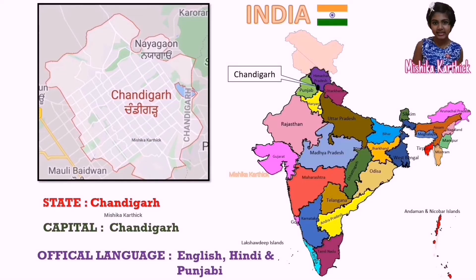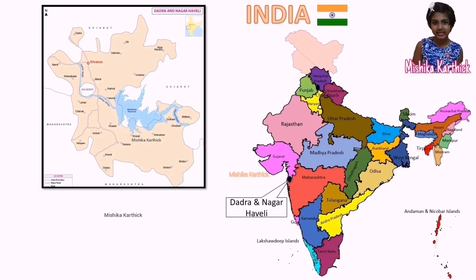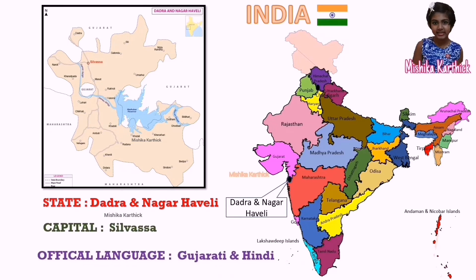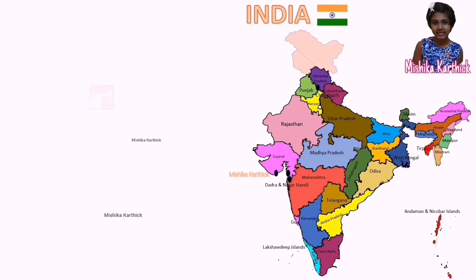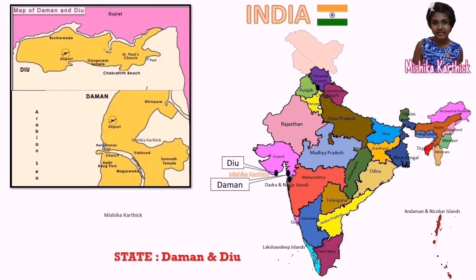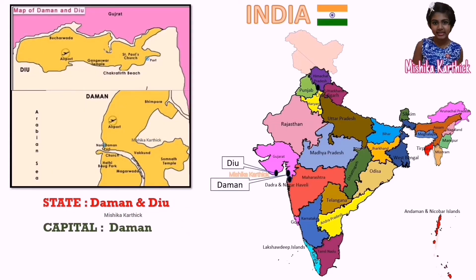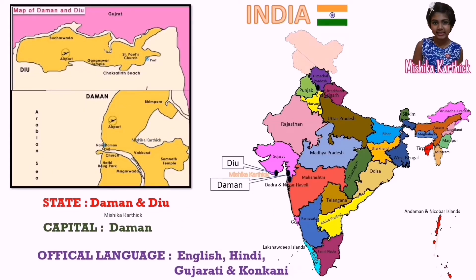Chandigarh is the capital of both states Haryana and Punjab. Dadra and Nagar Haveli, capital Silvasa, language Gujarati and Hindi. Daman and Diu, capital Daman, language English, Gujarati, Hindi and Konkani.